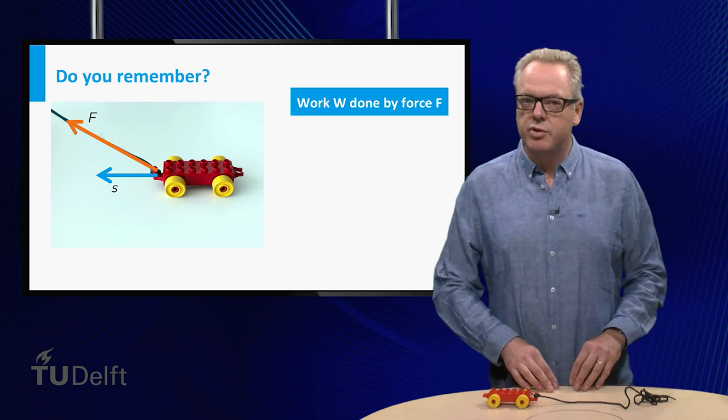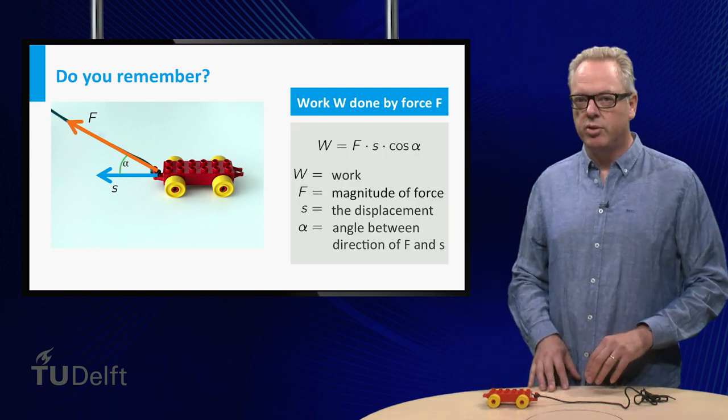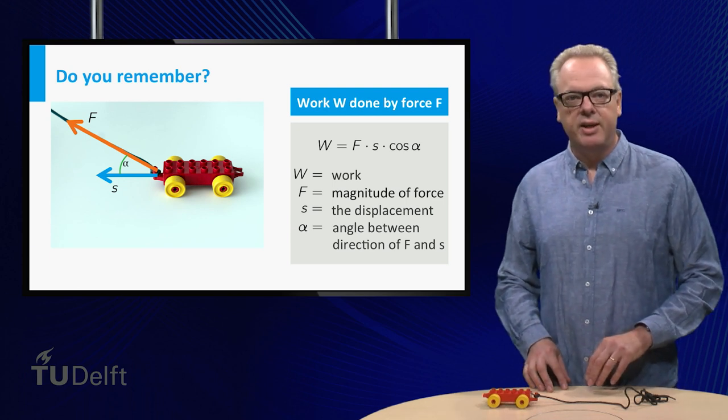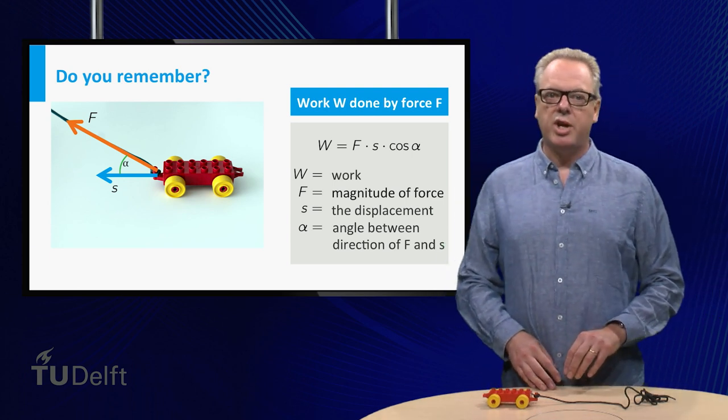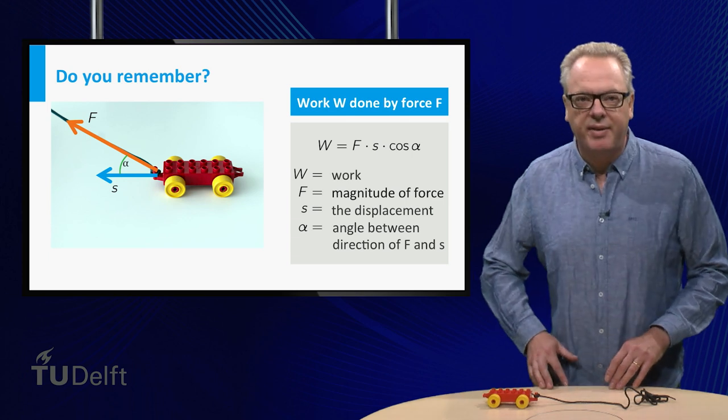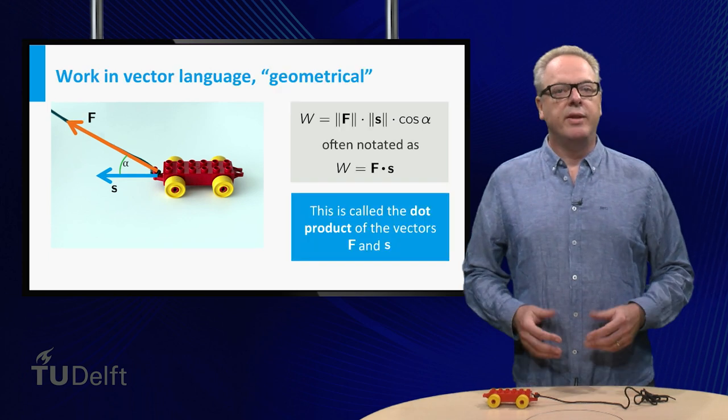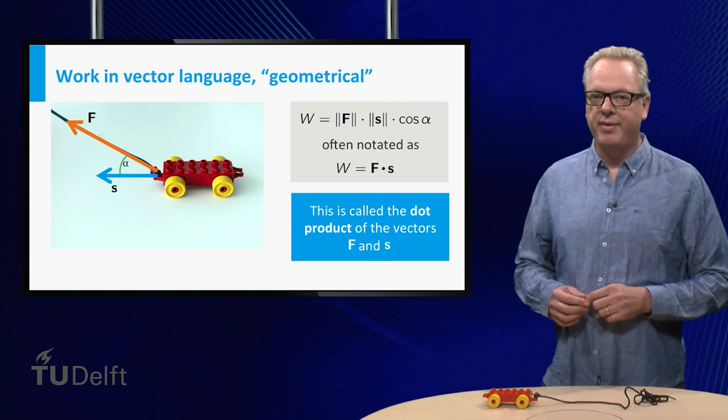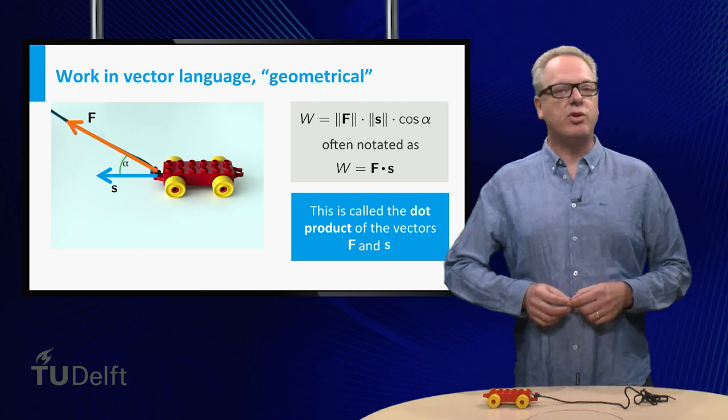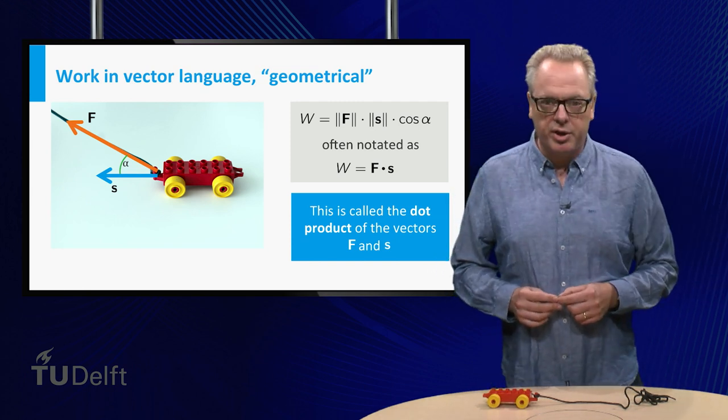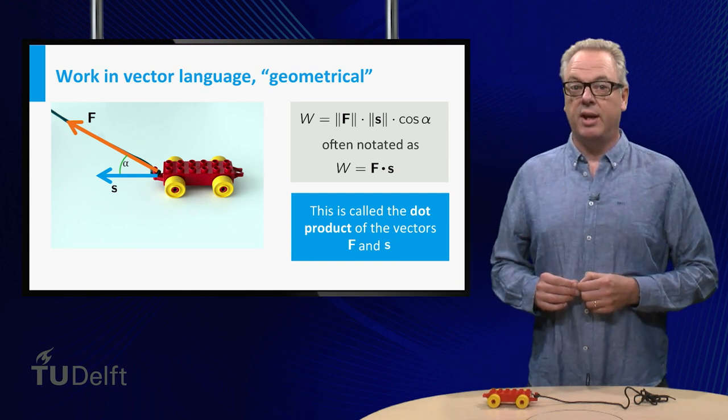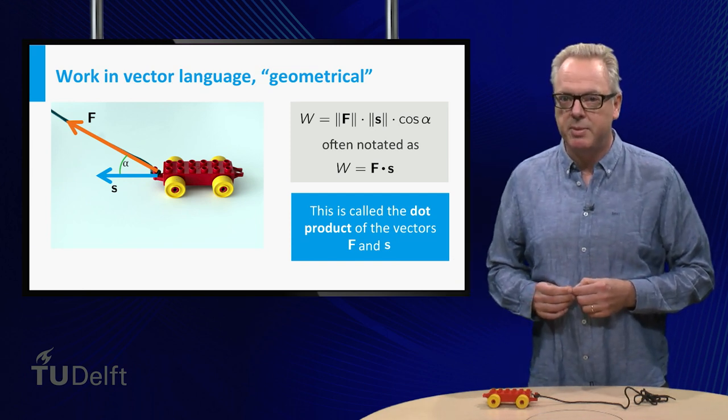At school, you learned to take the product of the magnitudes of the force F, distance S, and the cosine of the angle between F and S. This quantity is often written as F dot S and is called the dot product of force and displacement if you regard force and displacement as vectors.